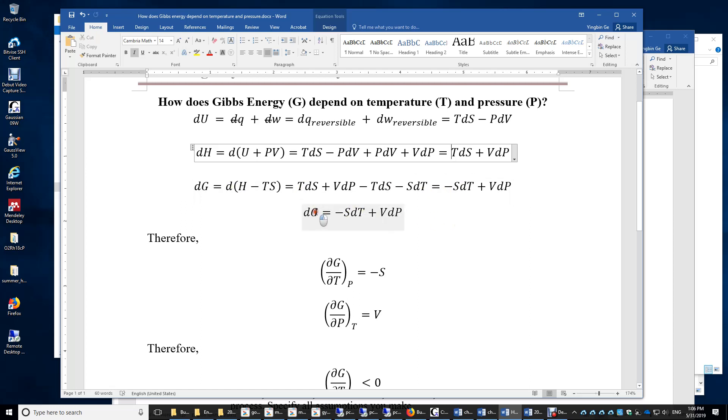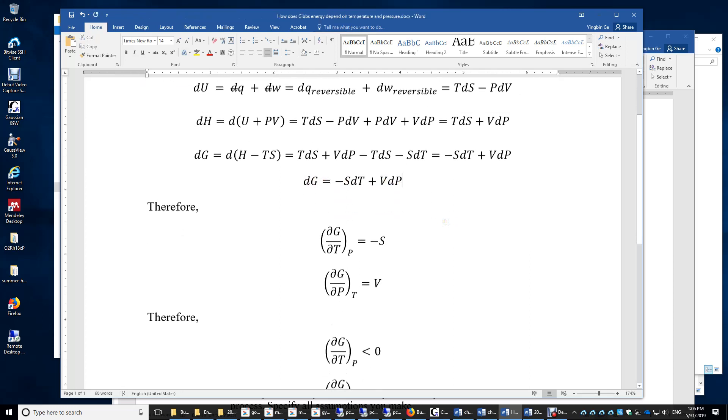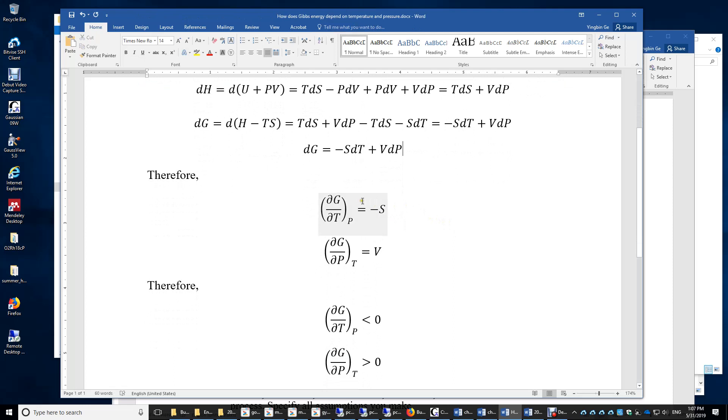So now we know how G depends on temperature. The dependence is negative S. And we know how G depends on pressure. The dependence is the volume of the system. But we also need to make sure that when we say dG over dT equals negative S, this is correct only if P is held constant. We can also say dG over dP equals V only if temperature is constant.